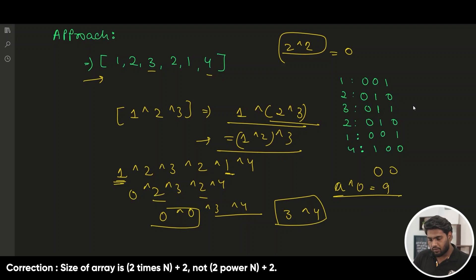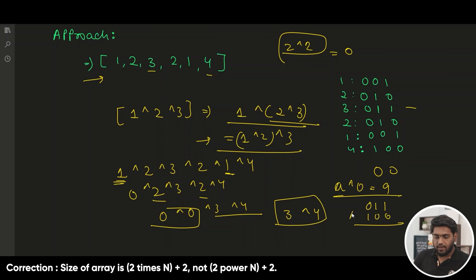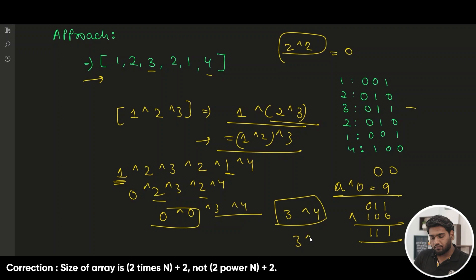So the combined XOR value: 3 XOR 4. We said 3 XOR 4 is actually 7. Let's verify — 3 is 0,1,1 and 4 is 1,0,0. Performing XOR: 0 and 1 are different so 1; 1 and 0 are different so 1; 1 and 0 are different so 1. So the XOR of 3 XOR 4 is 1,1,1 which is 7.